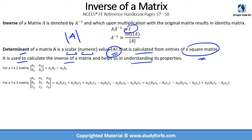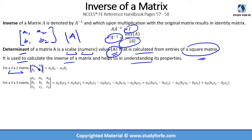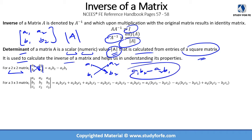For a two by two matrix with entries a1, a2, b1, b2, the determinant is simply calculated by multiplying a1 with b2 and subtracting a2 times b1 from it. So the arrows go like this: a1 times b2 minus b1 times a2. That's for a two by two matrix.